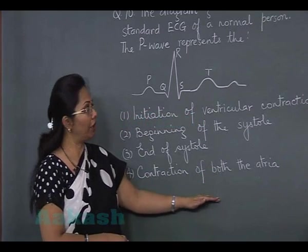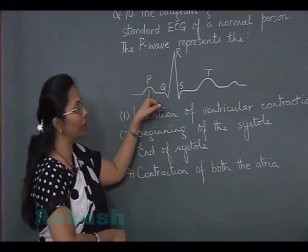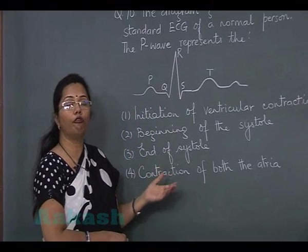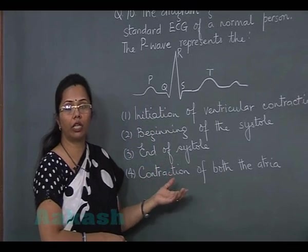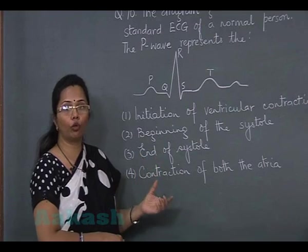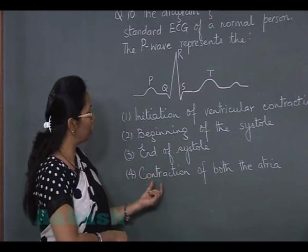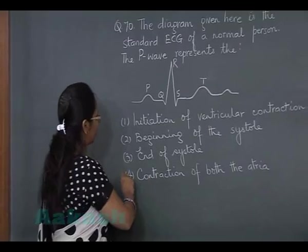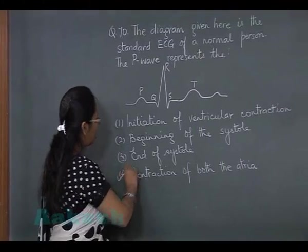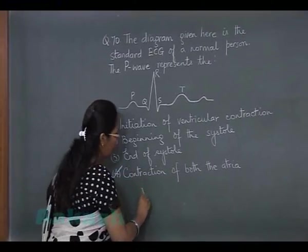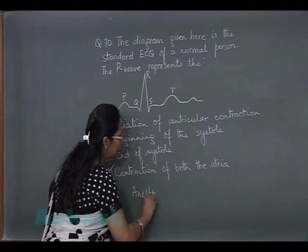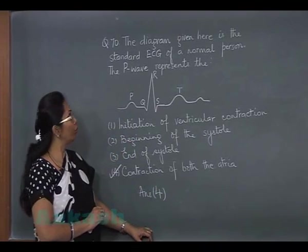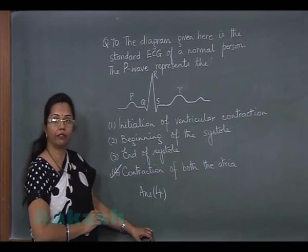The fourth option is contraction of both the atria. When the P wave appears, it represents depolarization of the atria, which results in the contraction of both atria. So this is the nearest and correct choice — the answer to question 70 is option 4.